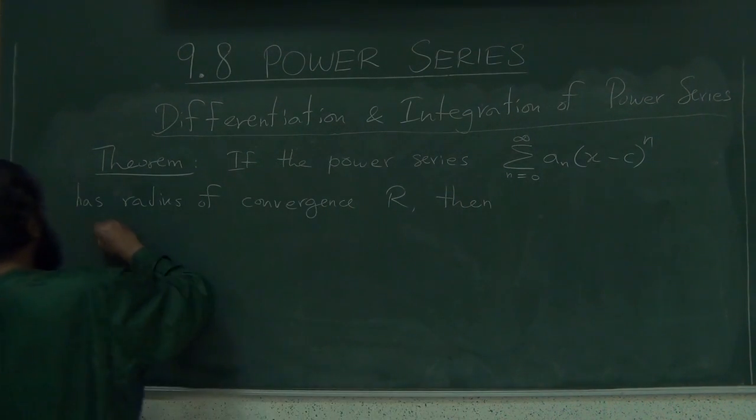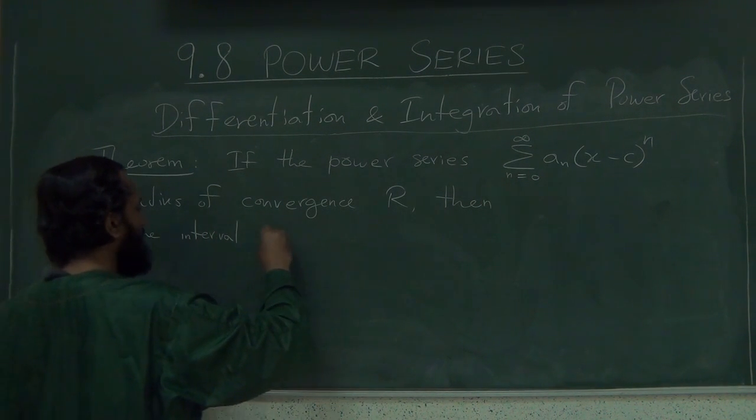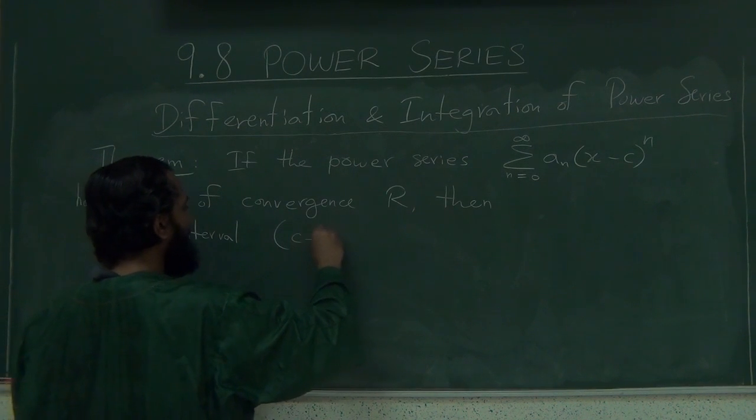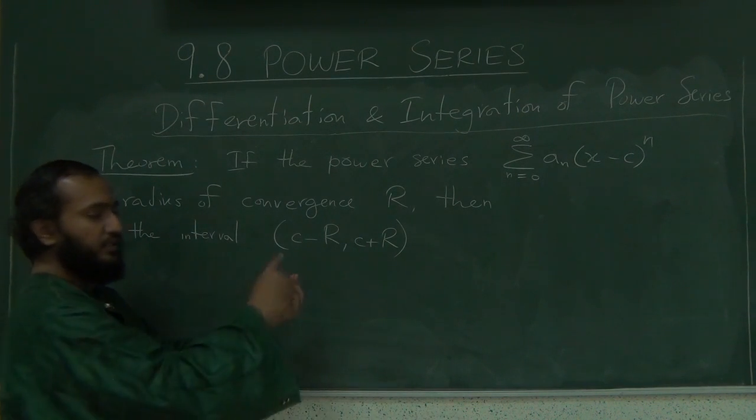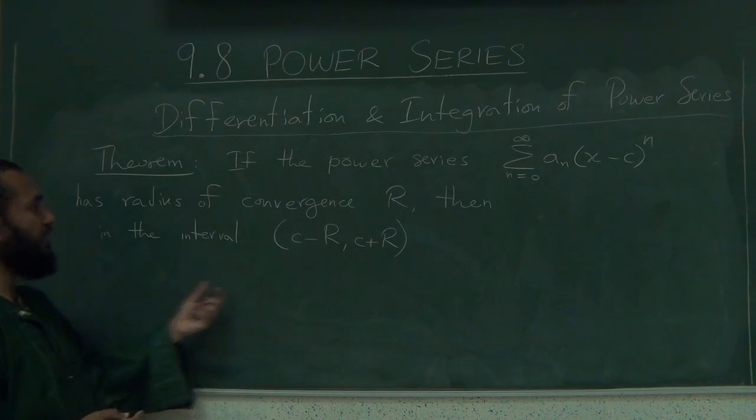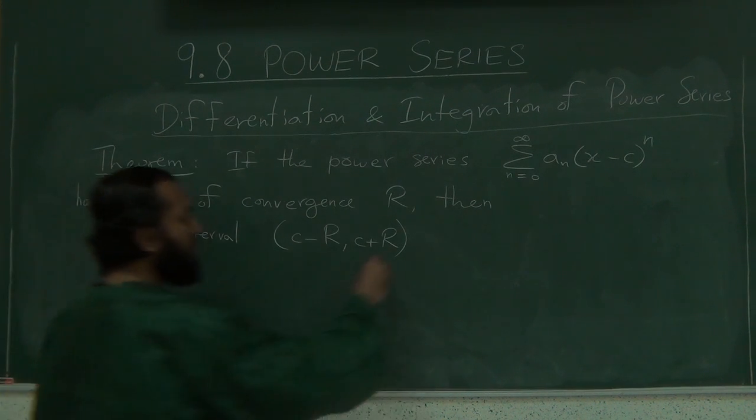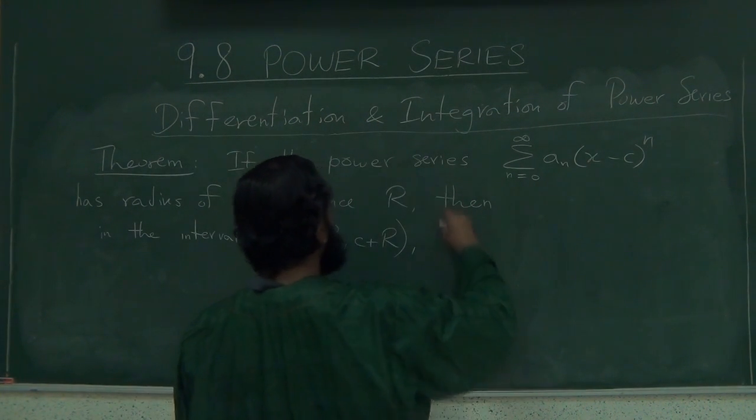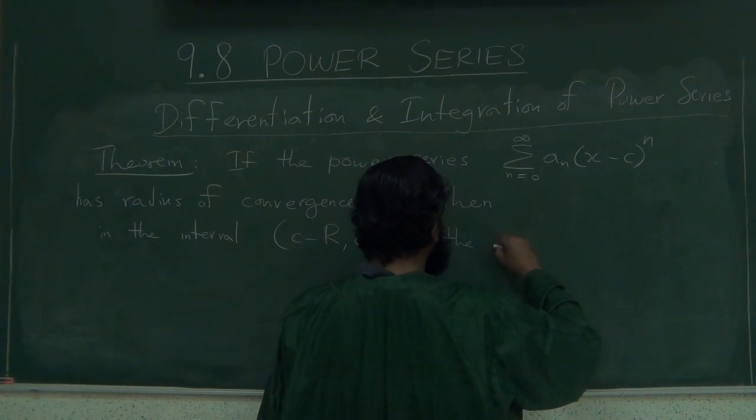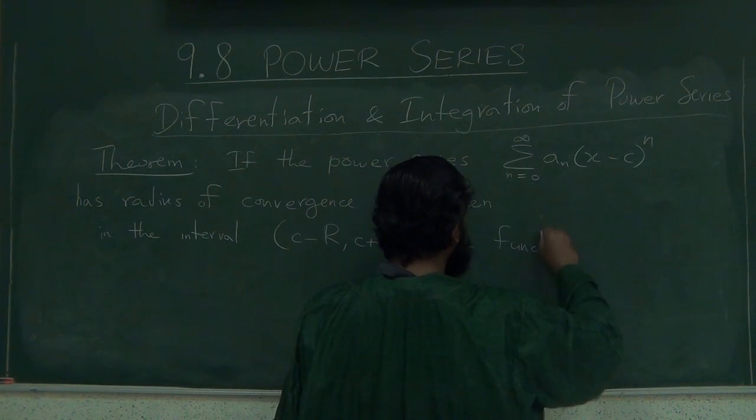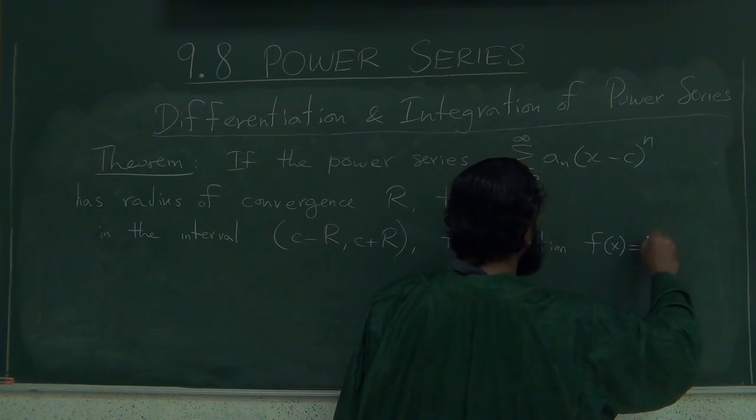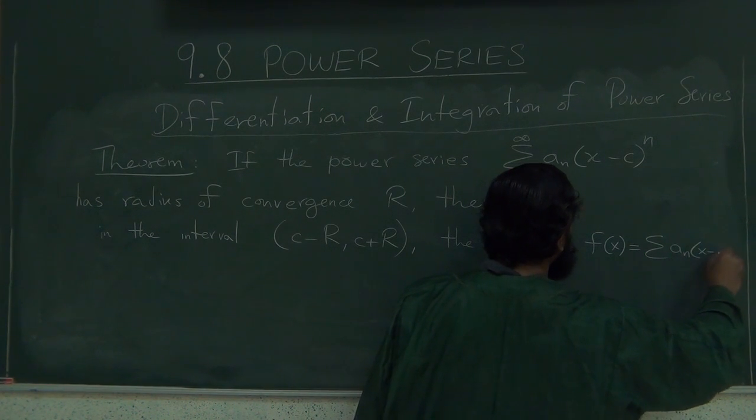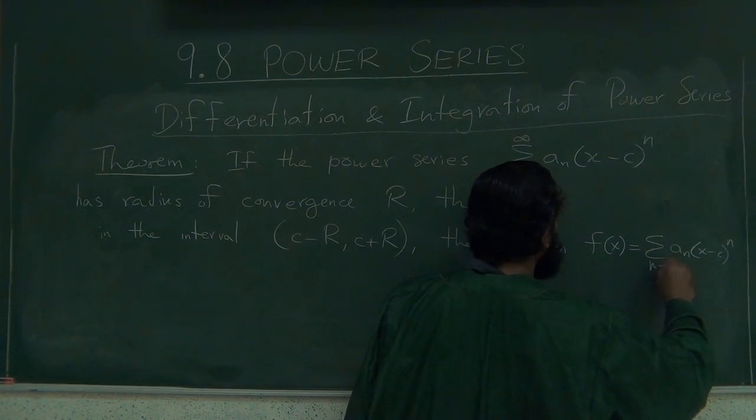in the interval c minus r and c plus r, right? So c is the center, r this way or that way, because you c minus r, c plus r. Then in this interval, the function f(x) equals the summation of a_n (x minus c) to the n, n equals 0 to infinity.